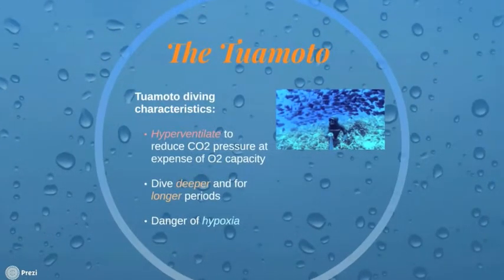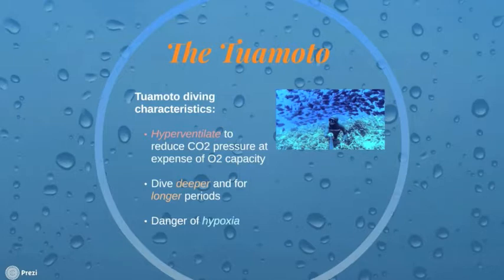In contrast are the Tuamotu divers of the South Pacific. These divers dive to greater depths than the Ama and do not focus on building their lung capacity for oxygen. Rather, the Tuamotu take rapid breaths to reduce the pressure of CO2 in their lungs, allowing them to hold their breath longer. However, this technique makes the Tuamotu more susceptible to low oxygen levels when they dive, which is seen in the higher rate of injury and death in this community, largely due to exposure to hypoxic conditions.